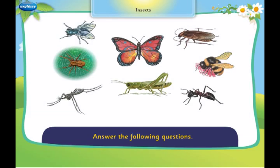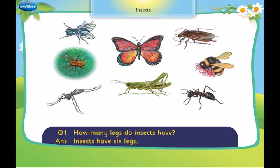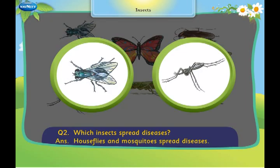Answer the following questions. How many legs do insects have? Insects have six legs. Which insects spread diseases? Houseflies and mosquitoes spread diseases.